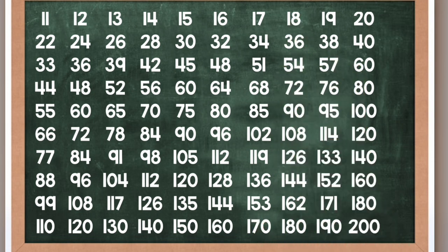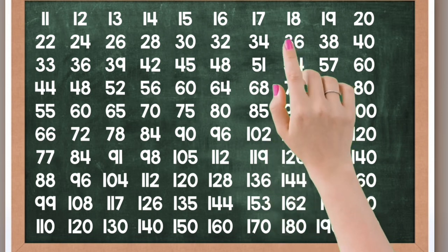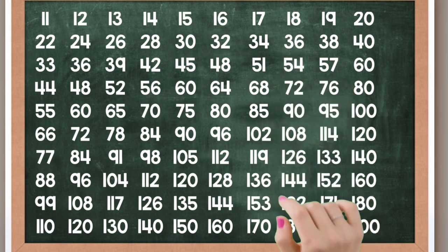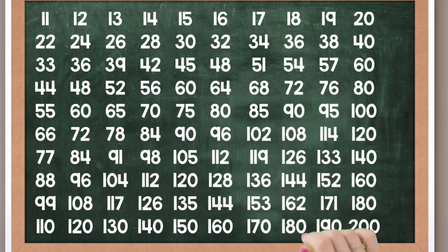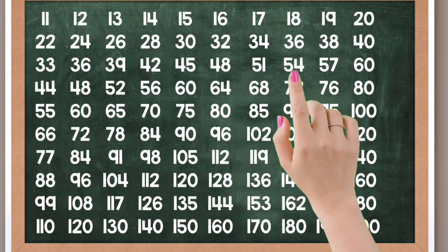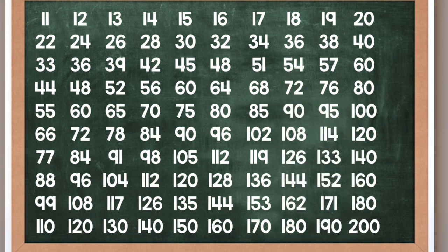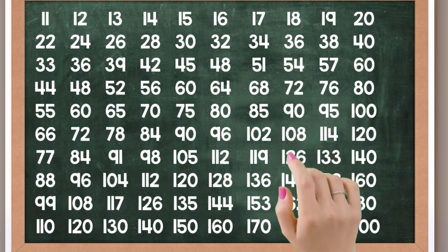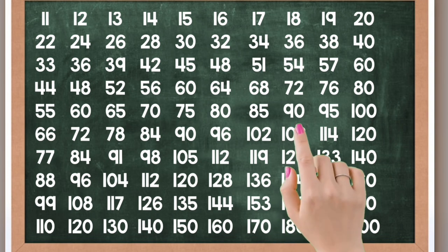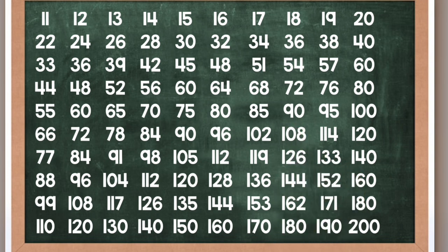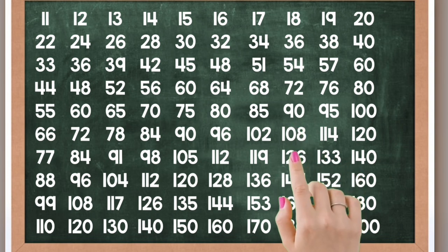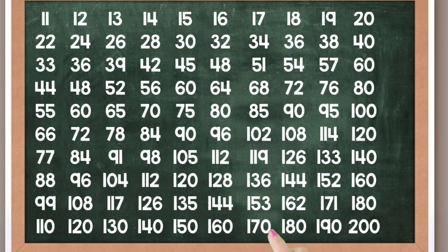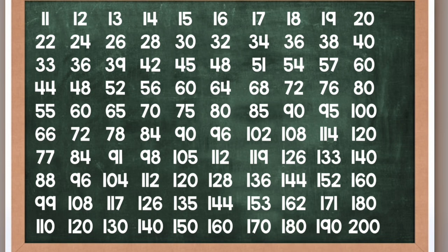18 times 1 is 18, 18 times 2 is 36, 18 times 3 is 54, 18 times 4 is 72, 18 times 5 is 90, 18 times 6 is 108, 18 times 7 is 126, 18 times 8 is 144, 18 times 9 is 162, 18 times 10 is 180.